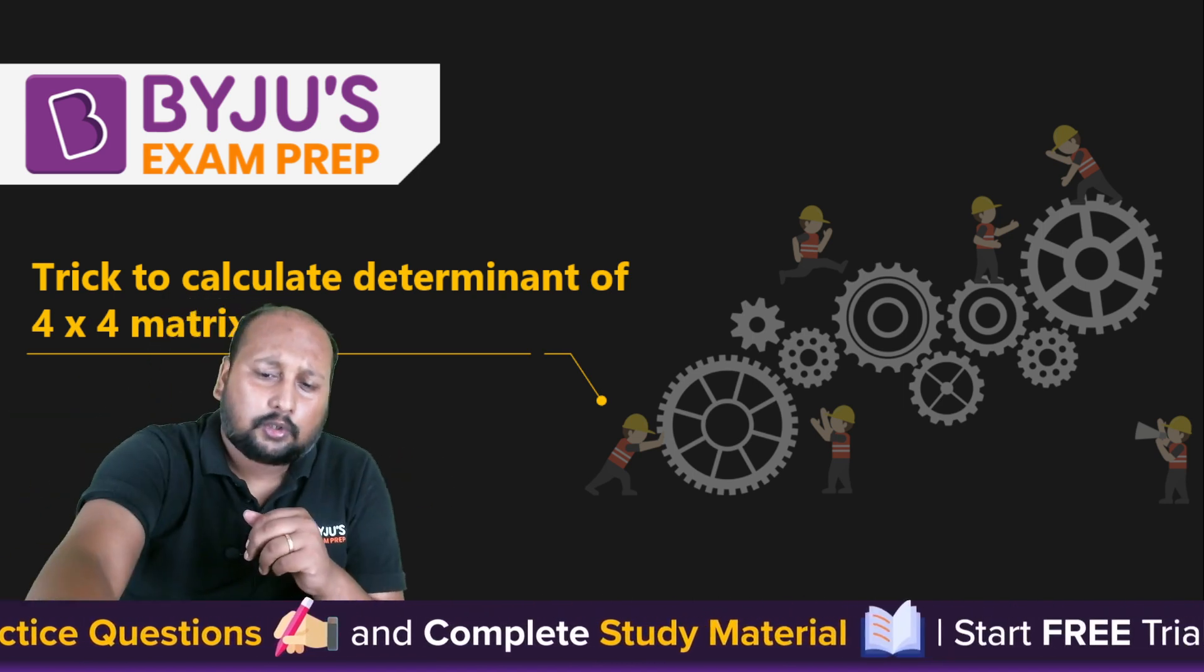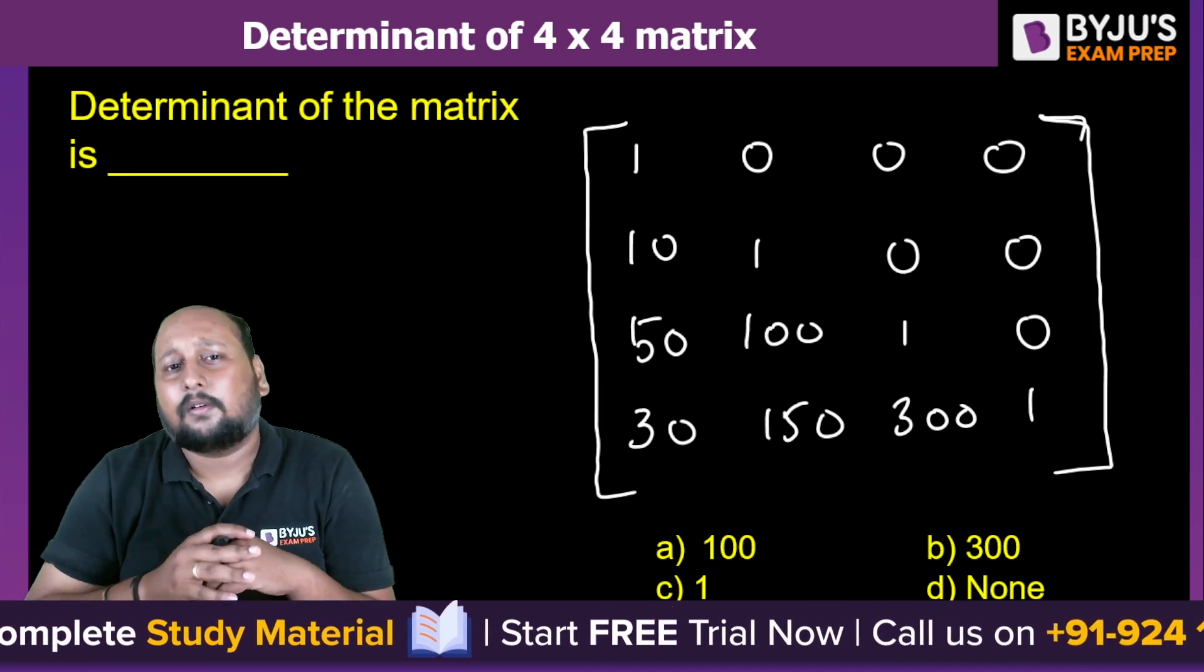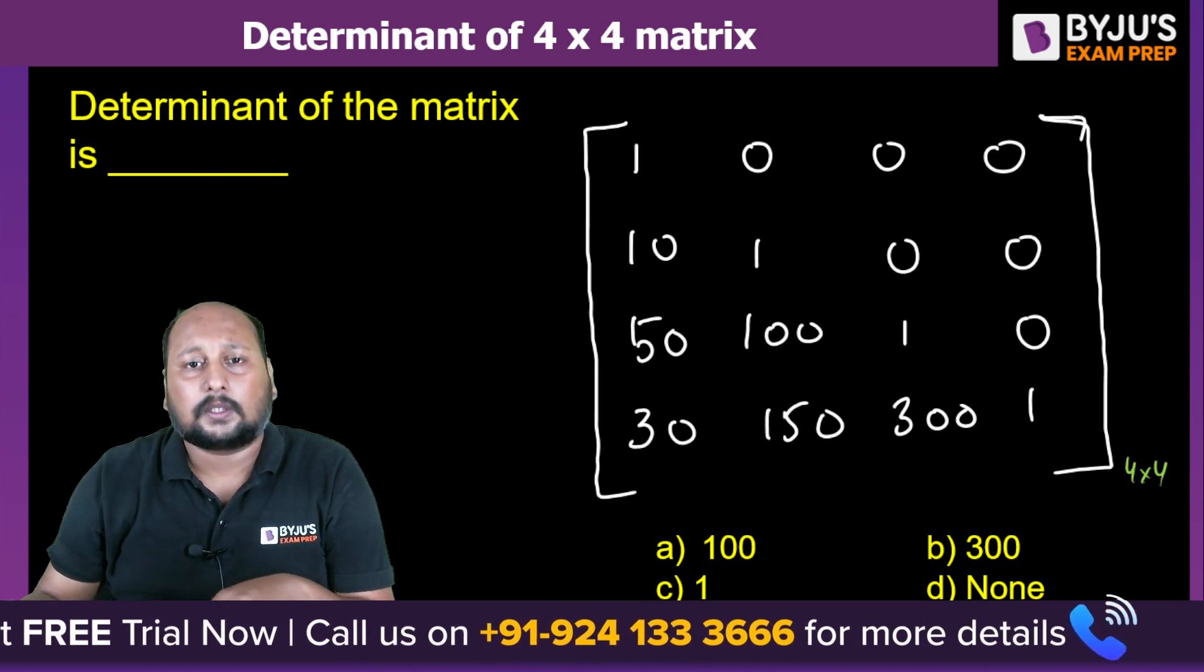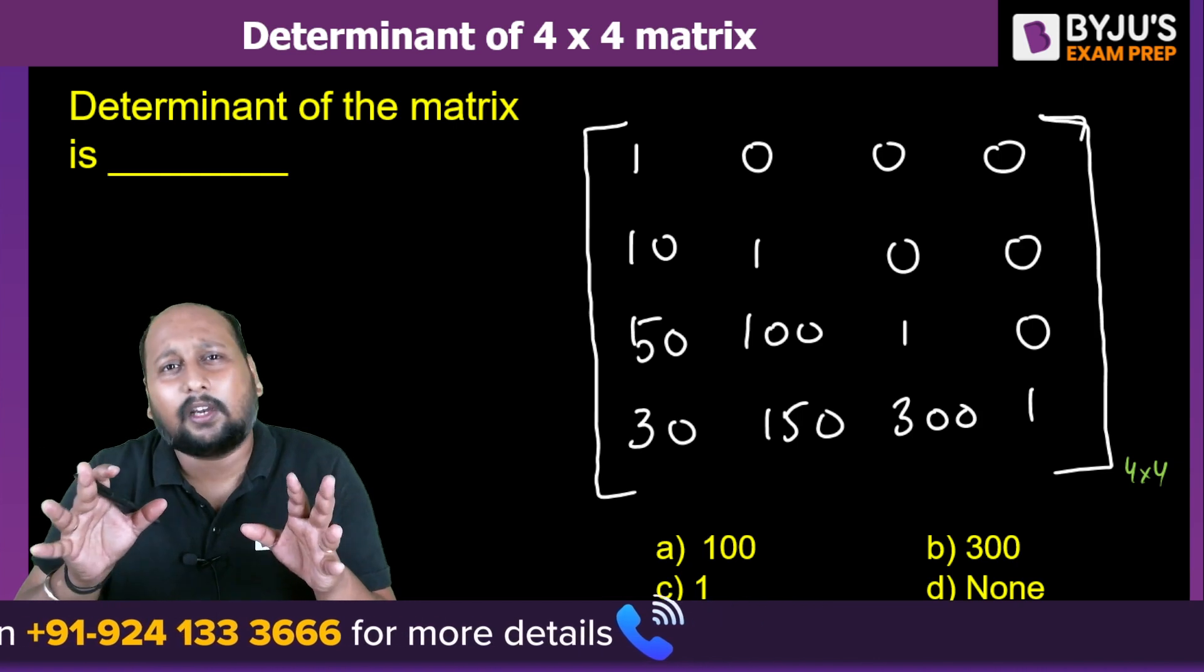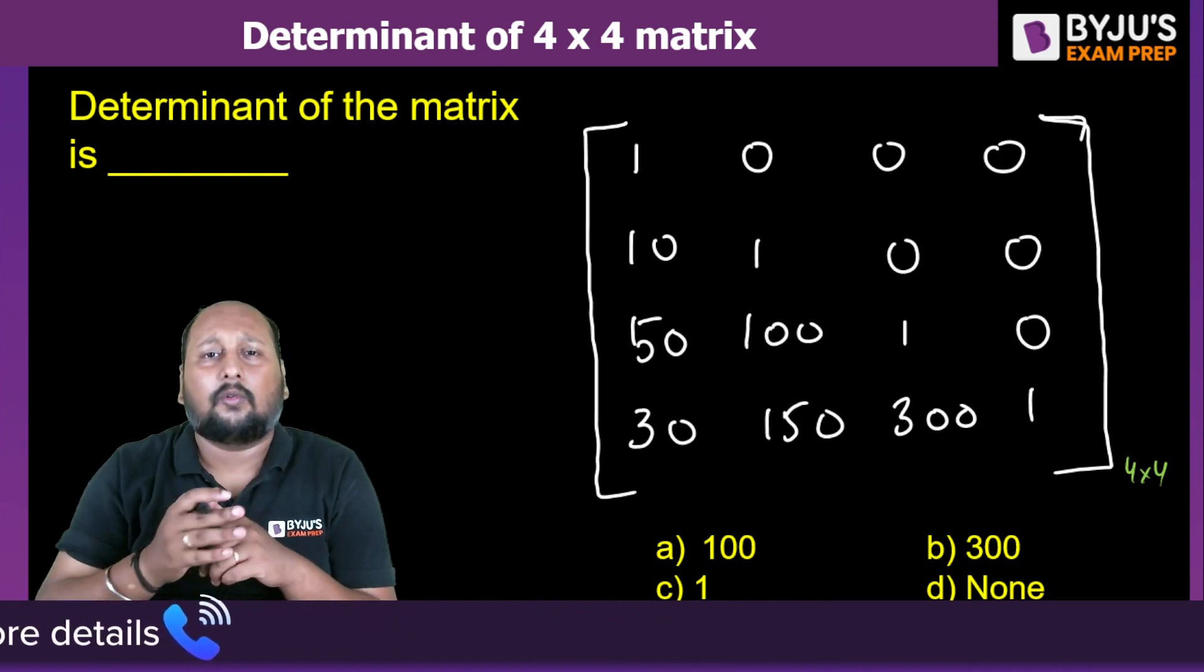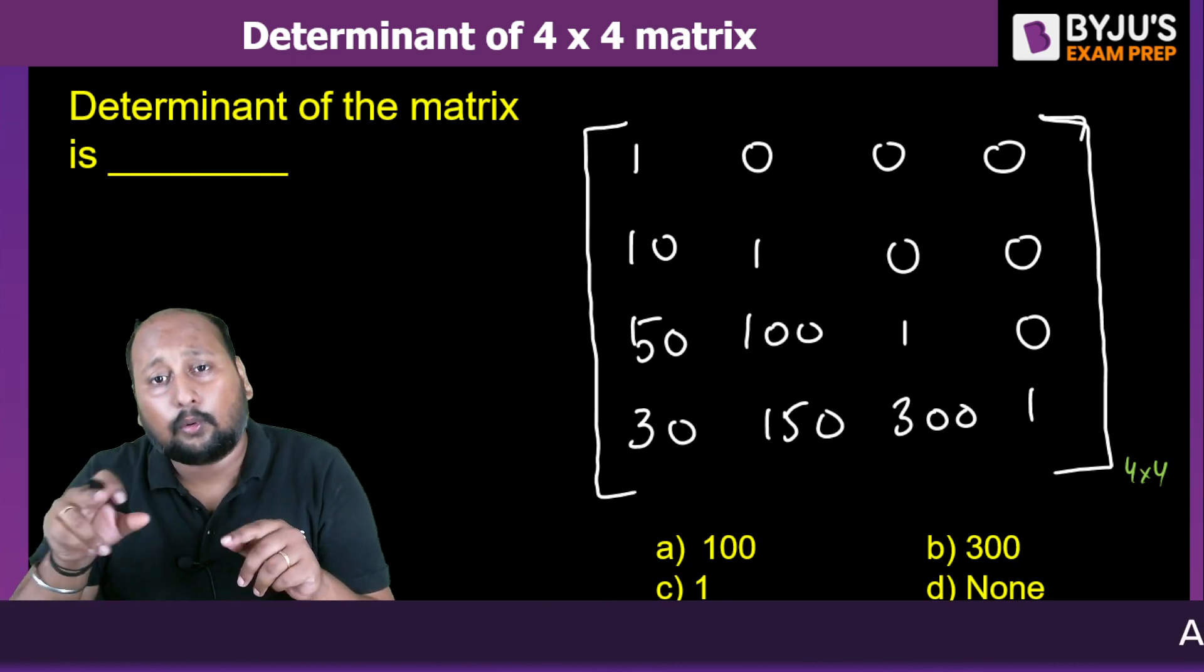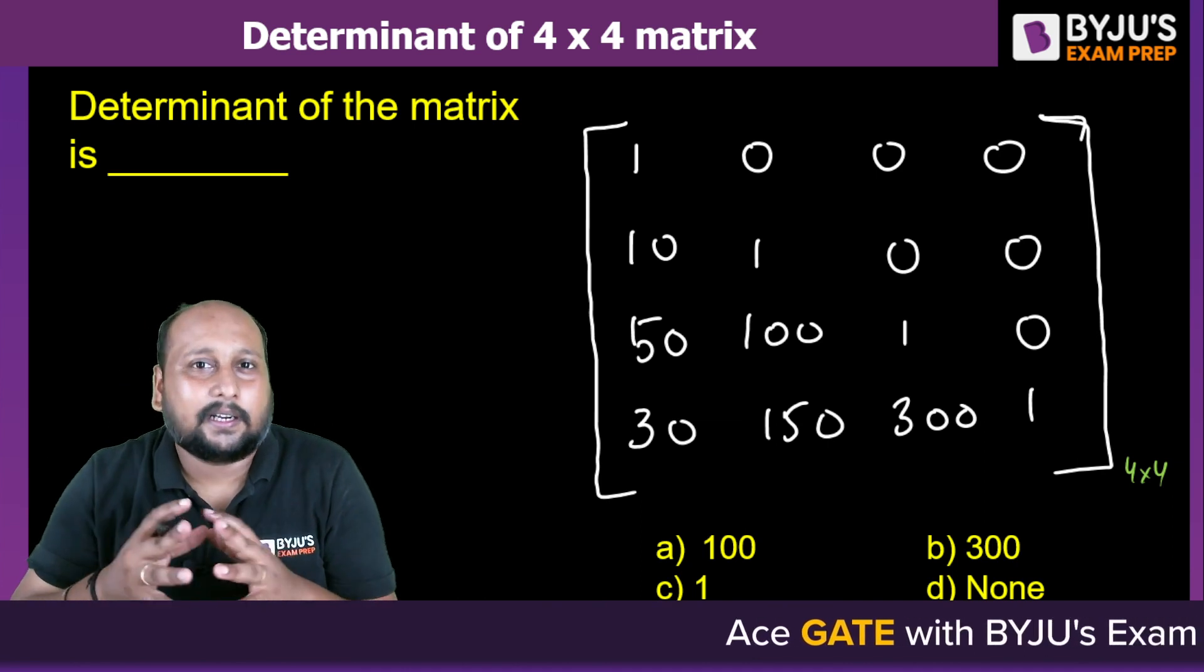Let us suppose there's a question on the screen that you have to calculate the determinant of this matrix which is a 4 × 4 matrix. Now the problem here is if you go with the conventional method it will be taking minimum three to four minutes to solve this question. You'll be eliminating row one and column one and taking the 3 × 3 matrix, then your column two and row one will be eliminated. It is basically a tedious task.